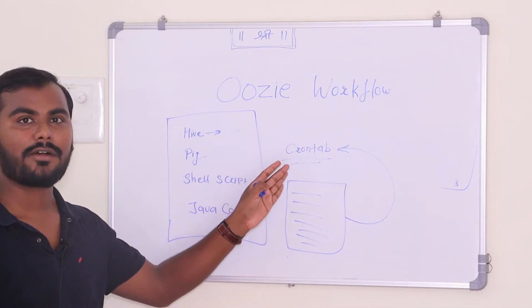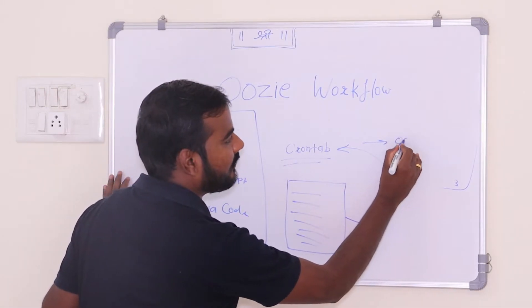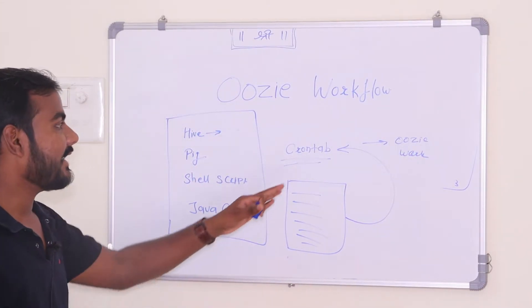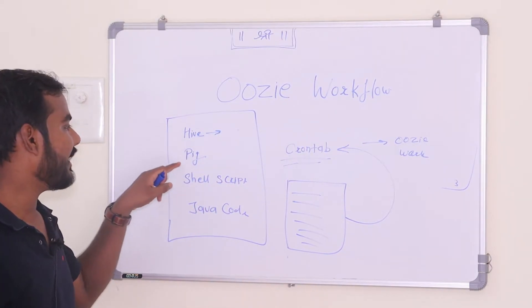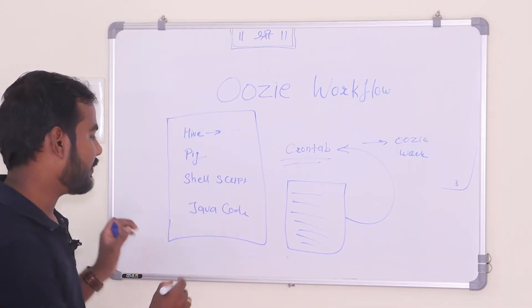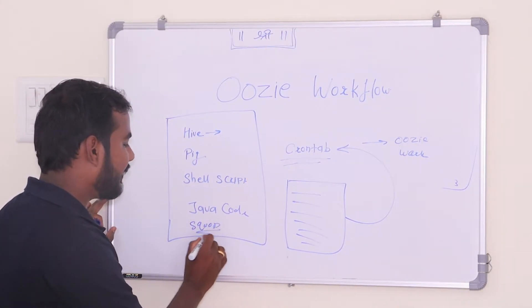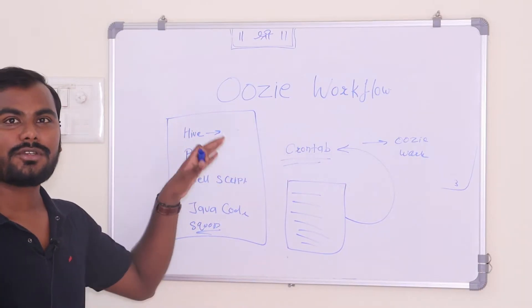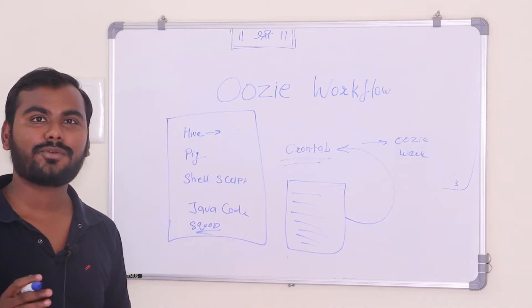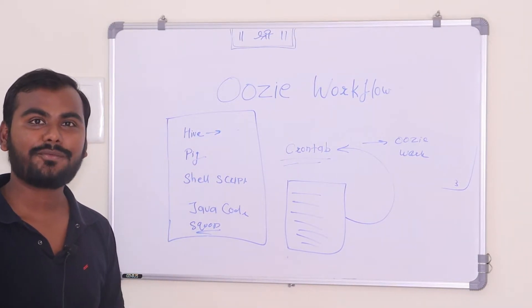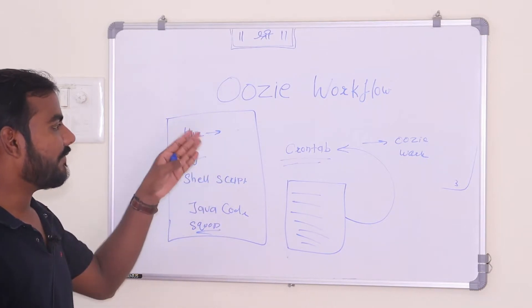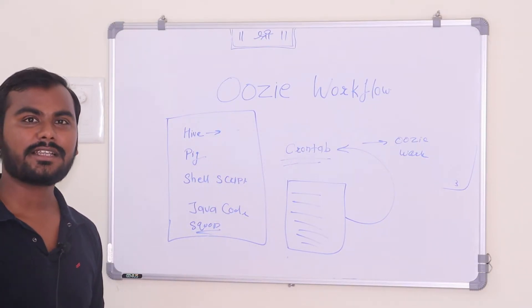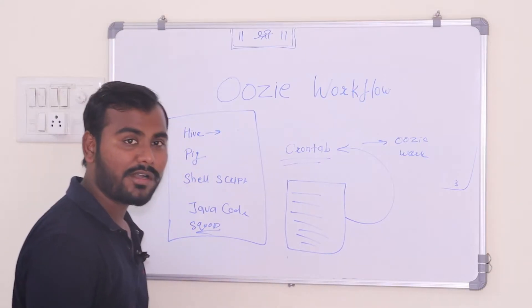In the Hadoop platform they are using the Oozie workflow. What does this Oozie workflow contain? It contains different actions like Hive, Pig, shell script, Java code, or you can also use Sqoop. These are the different actions you can configure into the Oozie workflow, and those same actions can be called from the Oozie workflow itself. At this point we need to understand that in order to configure and schedule jobs in the Hadoop platform, we are using the Oozie workflow.